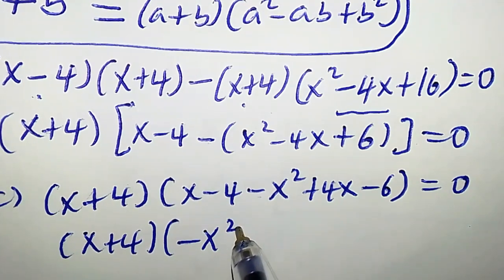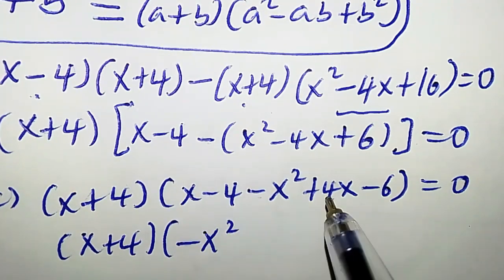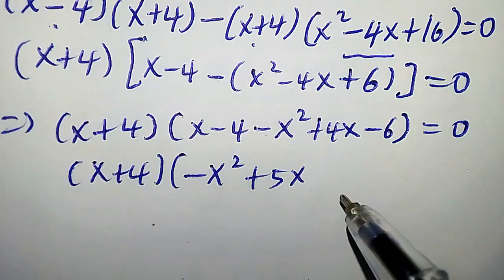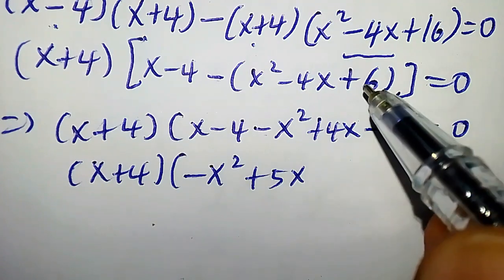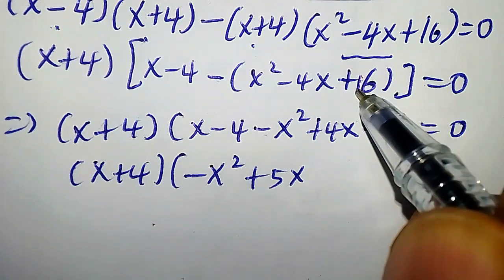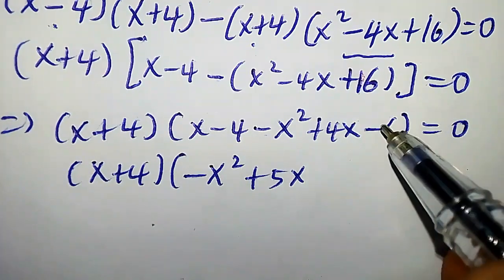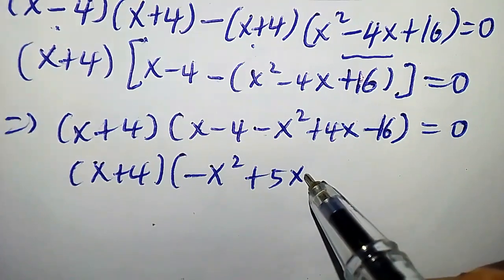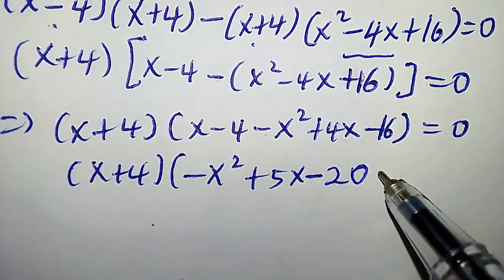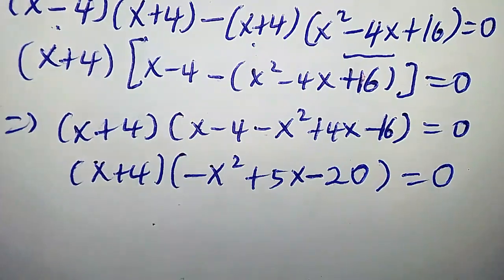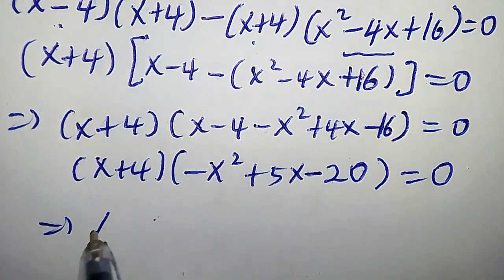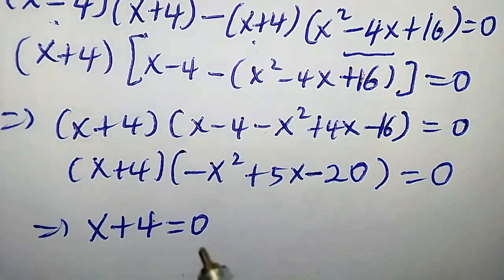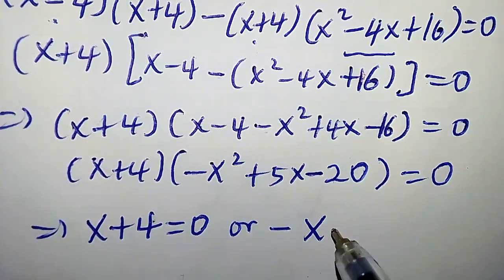This implies x plus 4 times: distributing the negative, negative x squared, minus times minus 4x gives plus 4x, minus times 16 gives negative 16, and minus 4 gives negative 20. Note: that value is 16, not 6 — so minus 4 minus 16 equals negative 20.